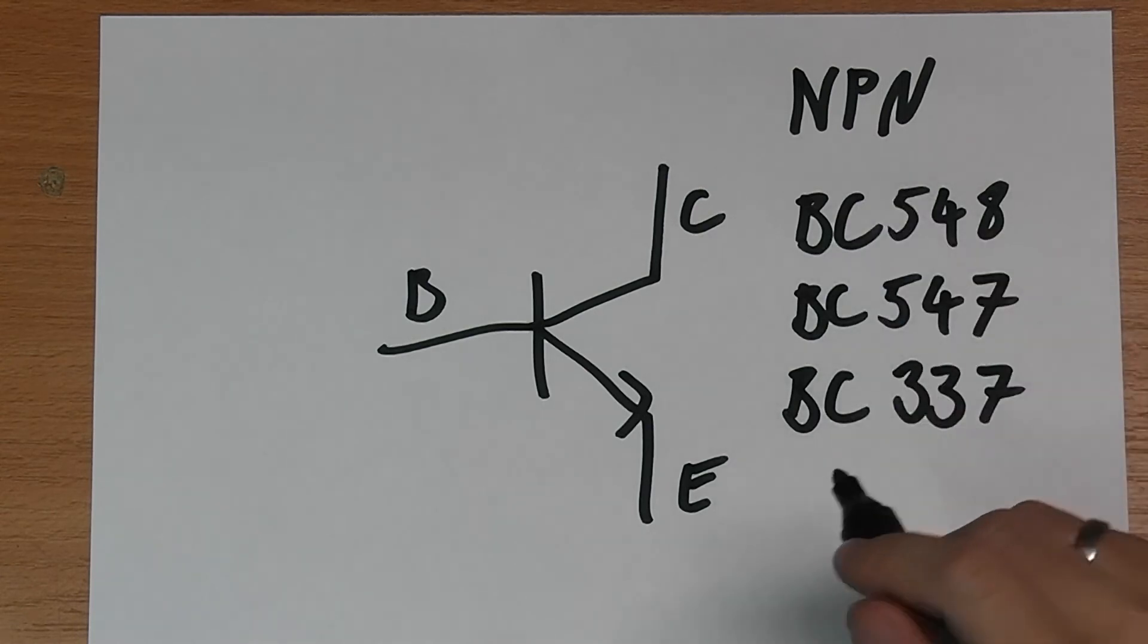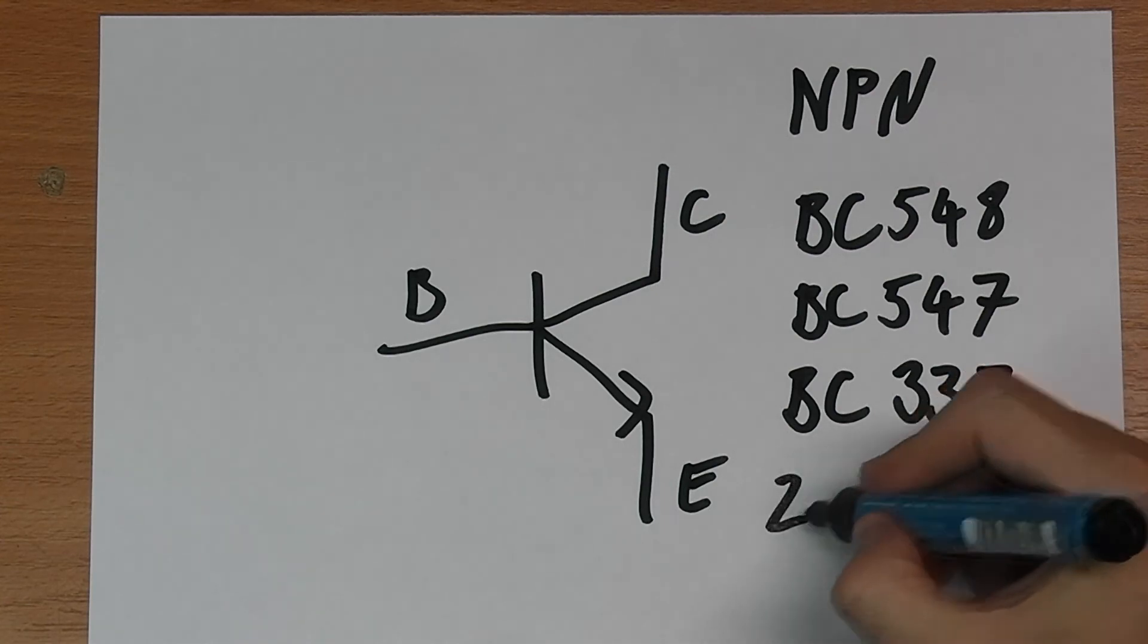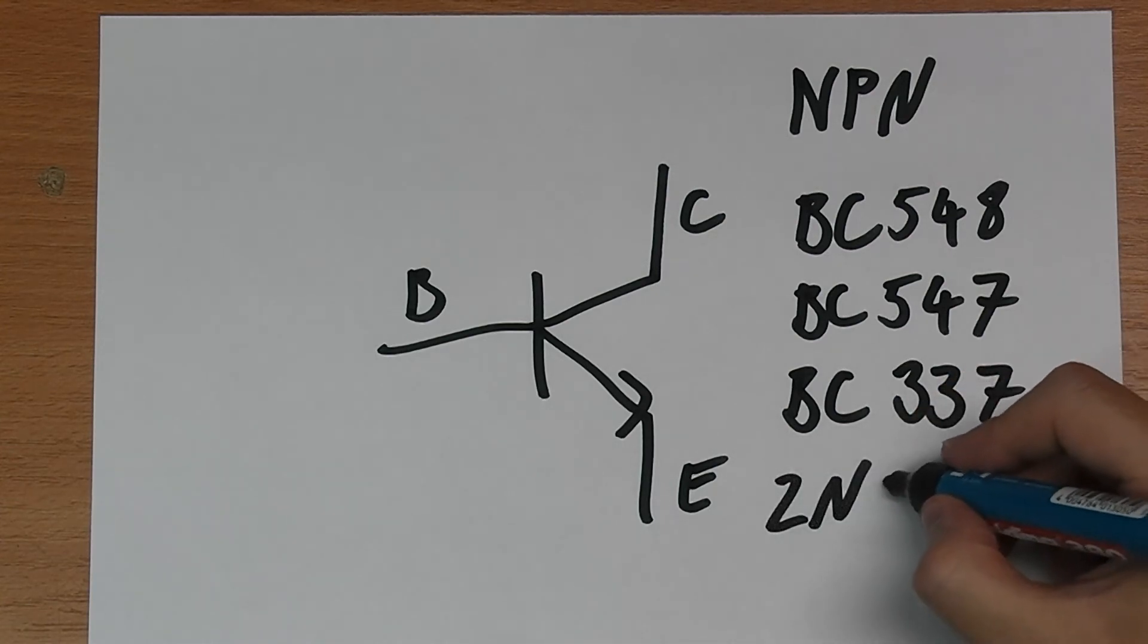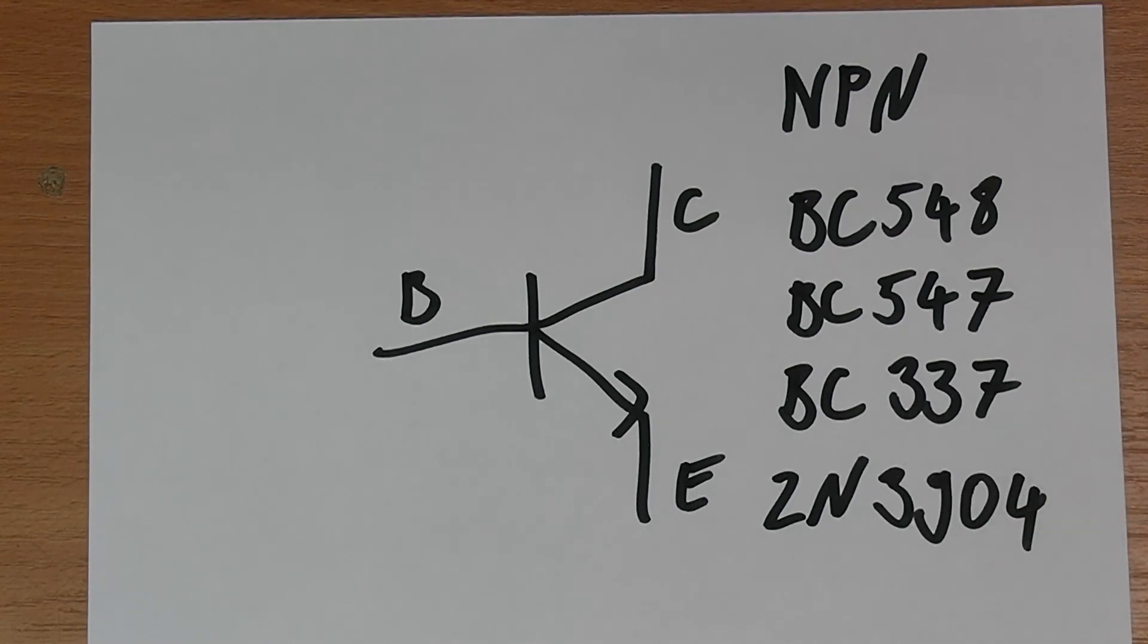The BC series is very common in Europe but is not so common in the US. So in the US the two N series are more common and the 3904 is probably what you want to use in here. So any of these will work fine.